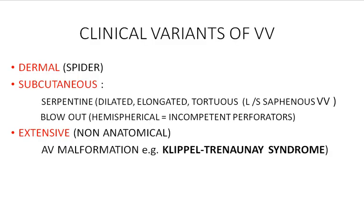There are several clinical types and variants of varicositis that may affect either dermal varicositis, subcutaneous veins, or sometimes they are so extensive and non-anatomical. Dermal varicositis occurs due to varicose dilatation of the subdermal plexus of venules; it gives the shape of a spider. Subcutaneous varicositis may be in the form of serpentine veins — serpentine means snake-like, bending like a snake. These are dilated, elongated, tortuous veins that usually affect the long and/or the short saphenous veins.